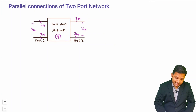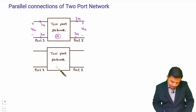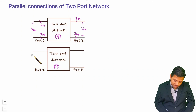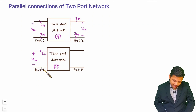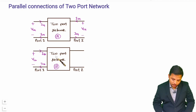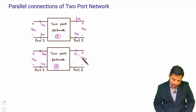Now let us consider the second two-port network, B. At port 1 of network B, the voltage is V1B, the current going inside is I1B, and the current coming out is I1B. At port 2 of two-port network B, the voltage is V2B and the current coming out is I2B.